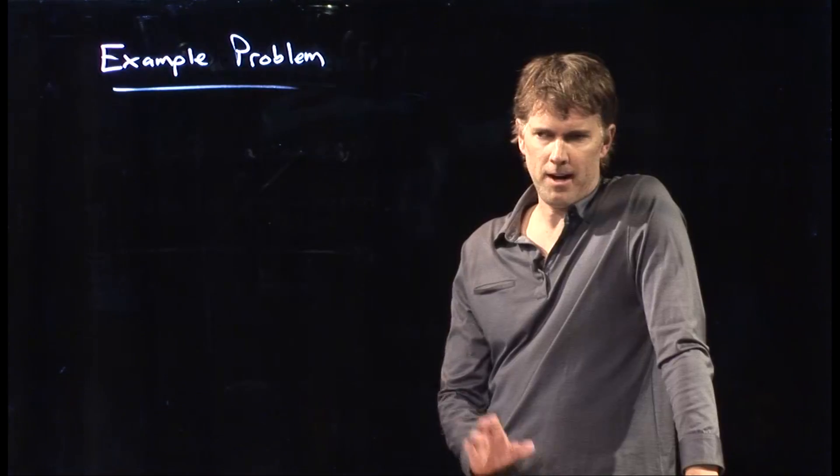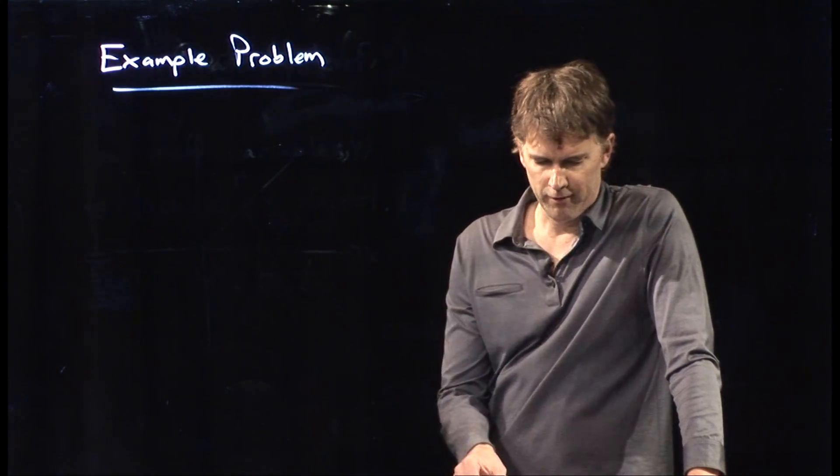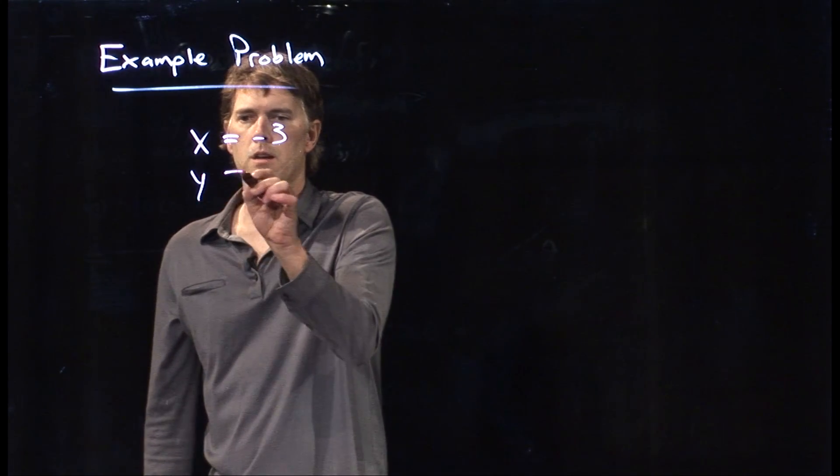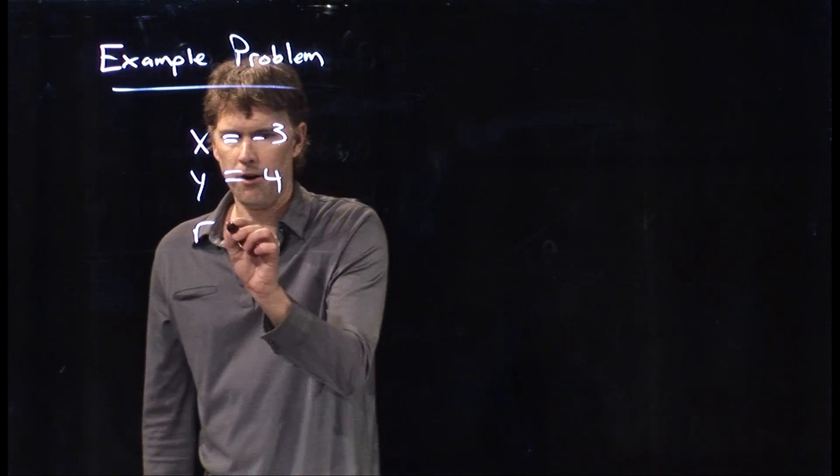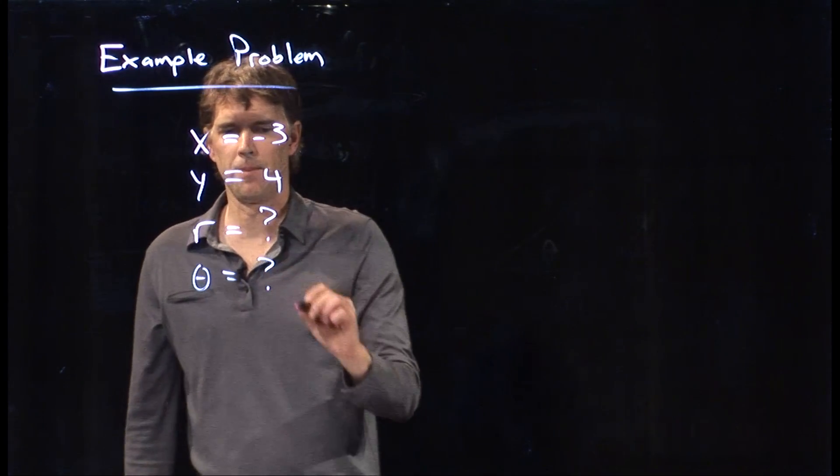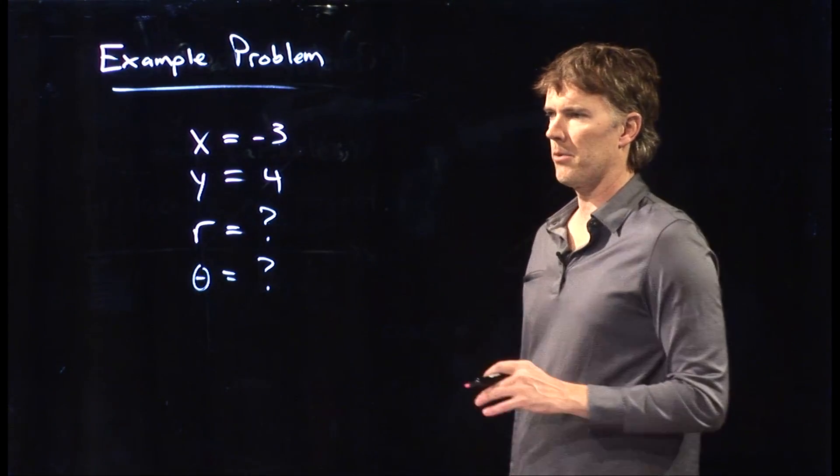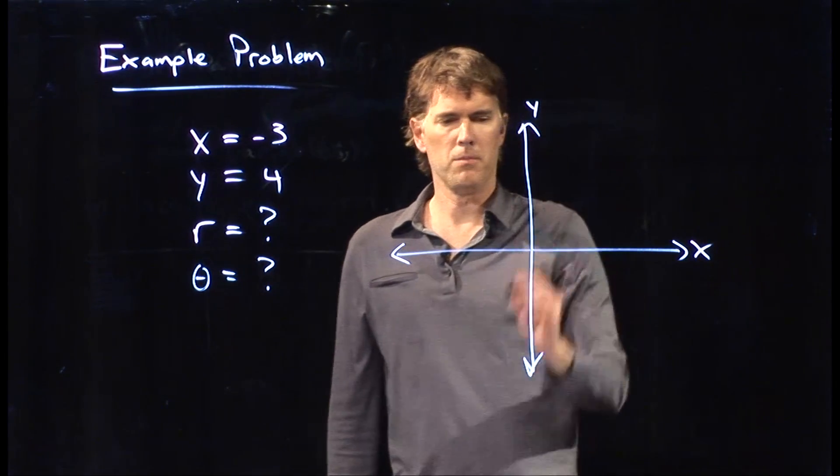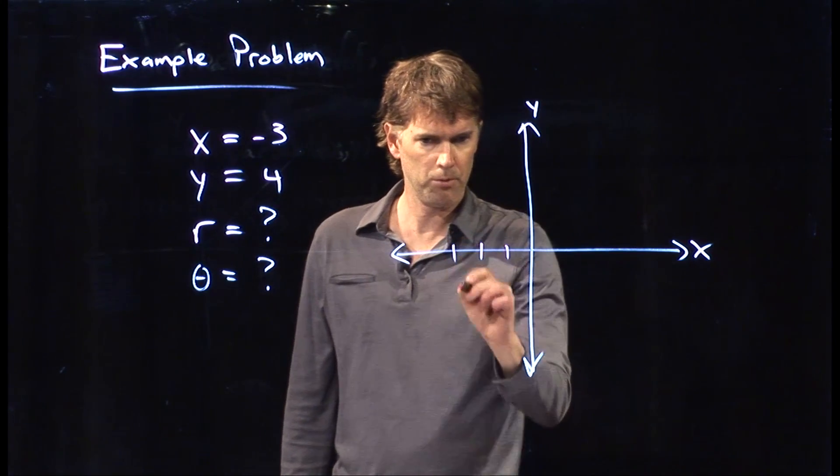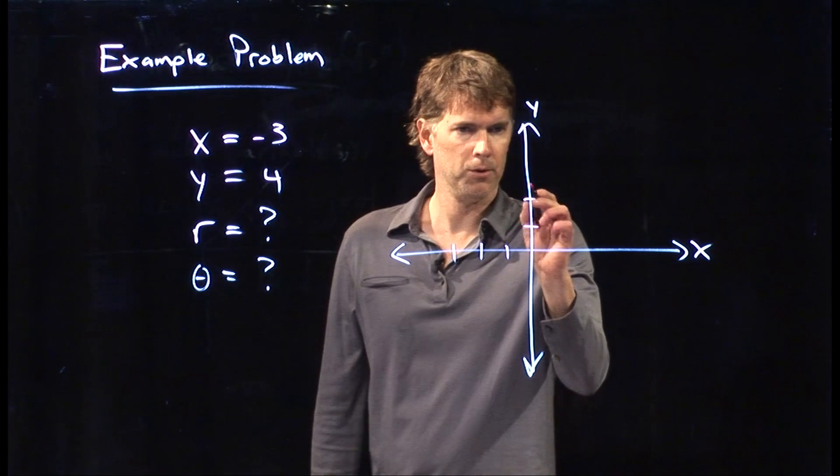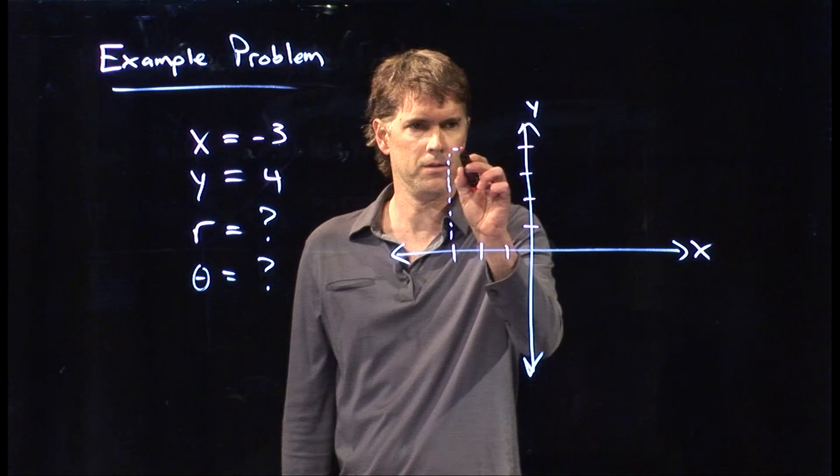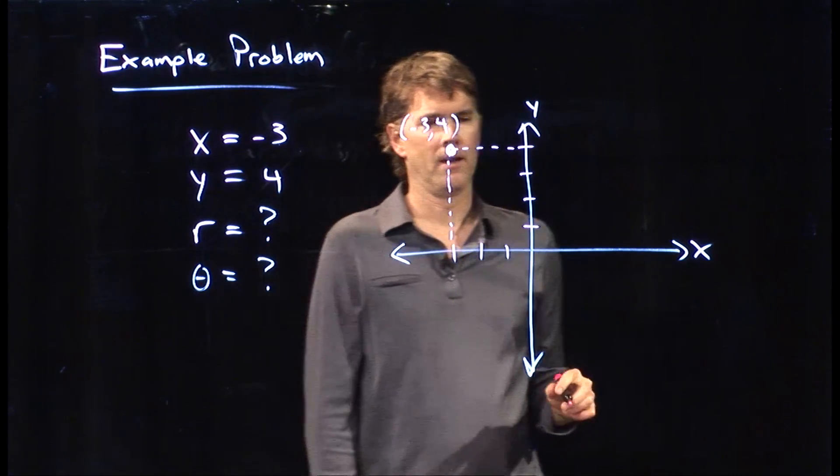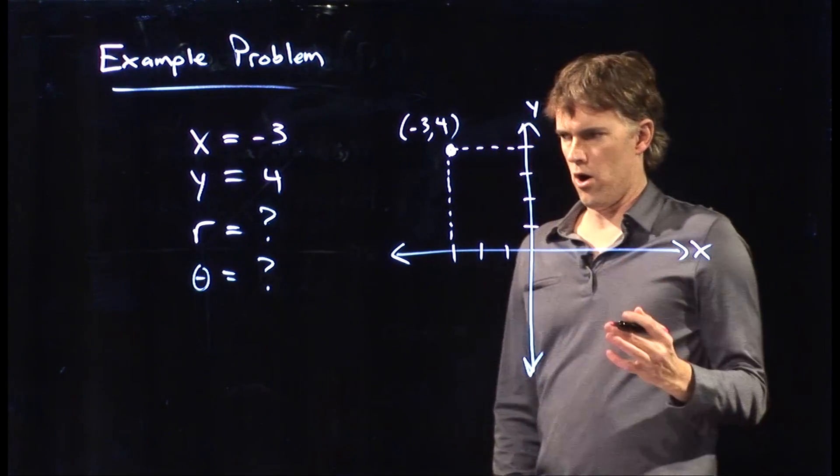All right. So let's try an example of a problem looking at polar coordinates for a simple set of coordinates. And let's start with x equals negative 3, y equals 4. And let's ask the question, what is r and what is theta? So x, y being negative 3, 4 means we are in a particular quadrant here. So where those two lines intercept, that's the point that we're interested in right there. That is negative 3, 4. And now we're faced with the question, what is r and what is theta?